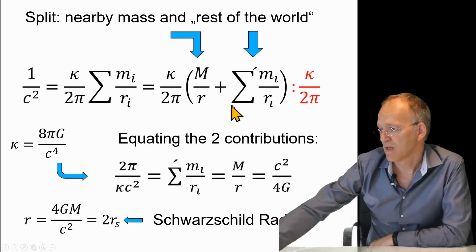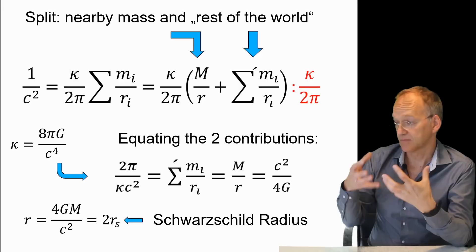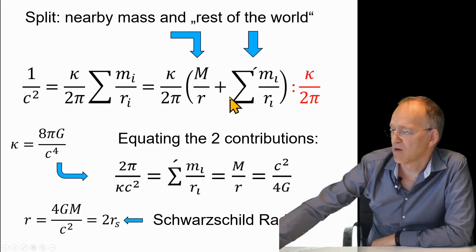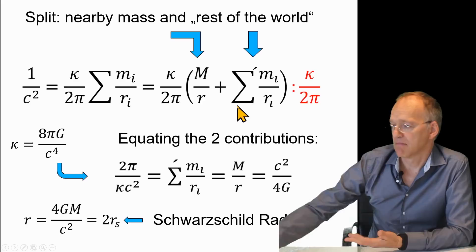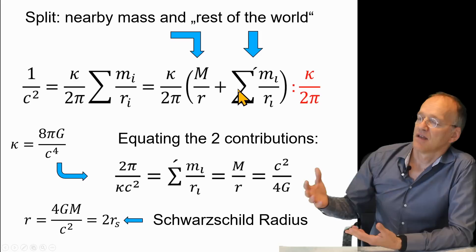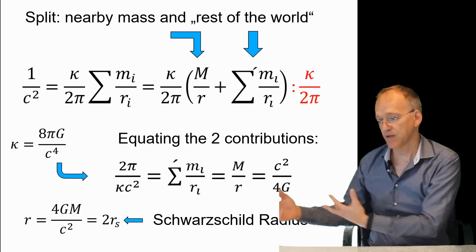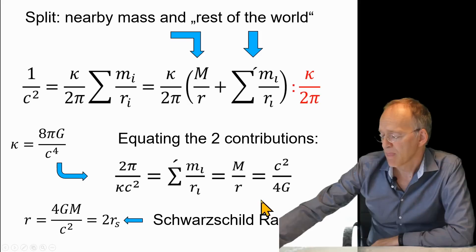You might split up this term and say this is the rest of the universe and this is the one mass I go very close to in order to feel something like this black hole. What happens if, as a limiting case, we imagine that the effect of the nearby mass is the same as the rest of the universe and equate these two terms: M over r and the rest of the sum.